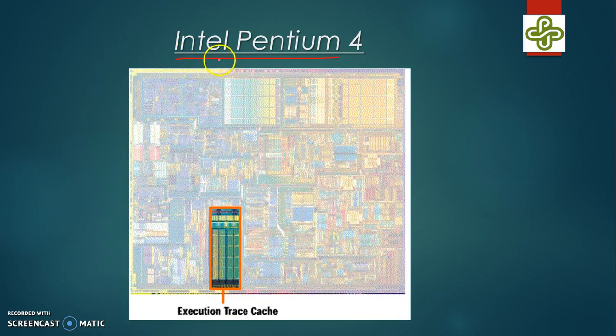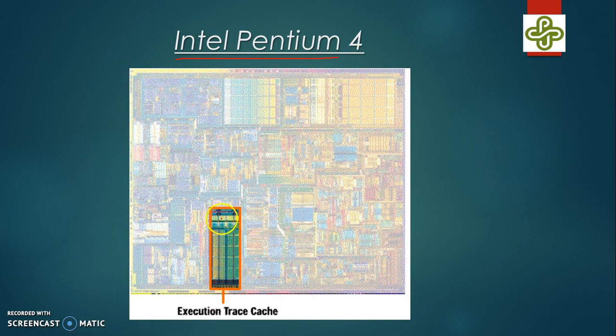An example of where a trace cache is used is Intel's Pentium 4 processor. Here is an image of the Intel Pentium 4 processor with the trace cache block highlighted.